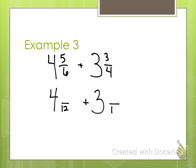10 over 12. Wait, how do I know what my numerator is going to be? Very good. 6 times what is 12? 2. So 5 times 2 is 10. What's my second numerator going to be? 9. Now that I have common denominators, I get 7 and 19 12ths.